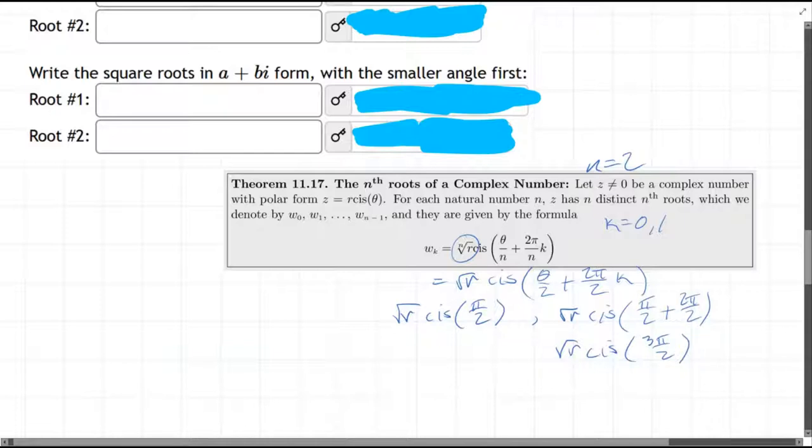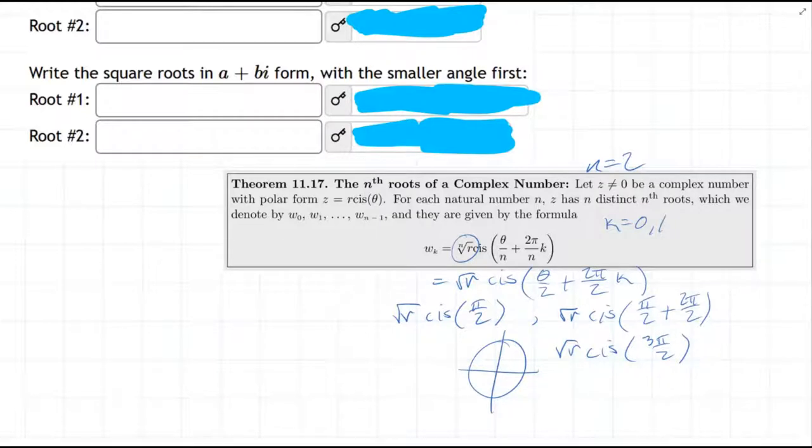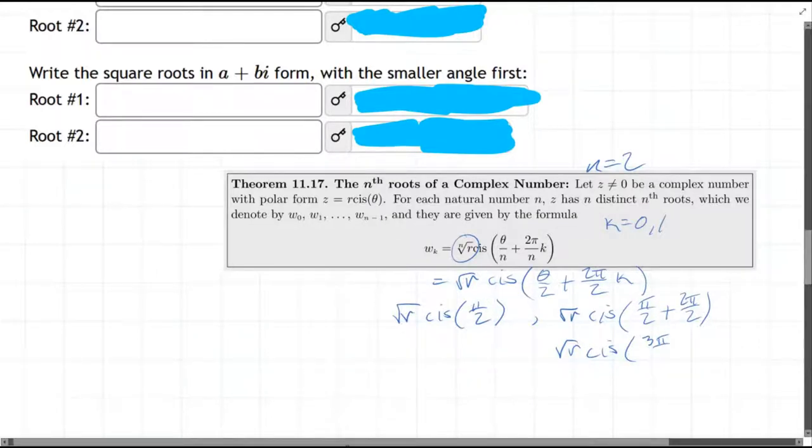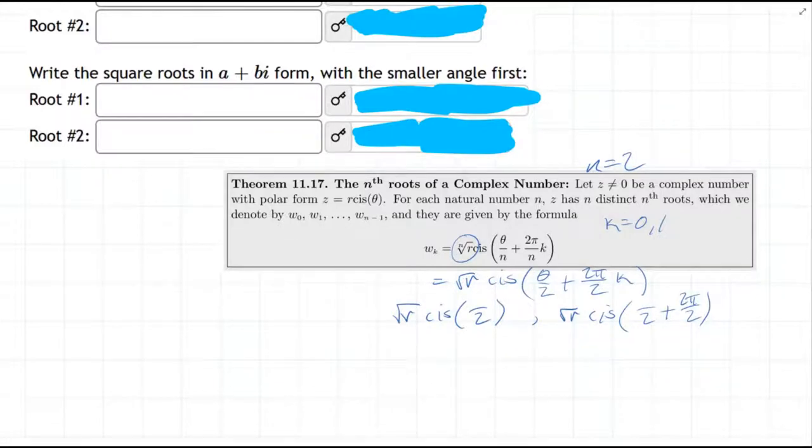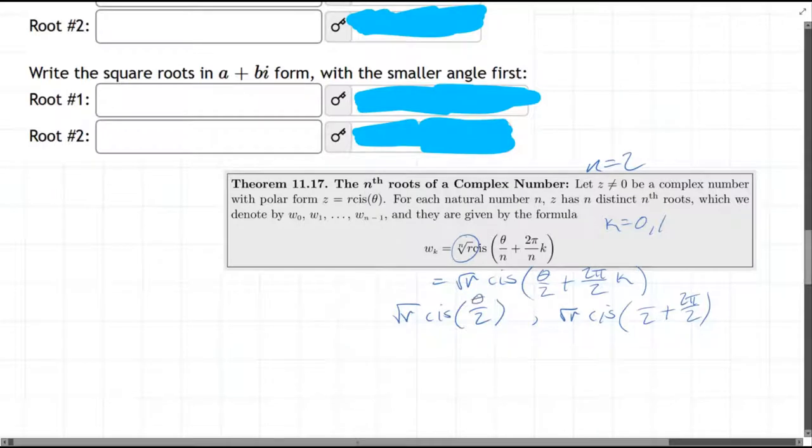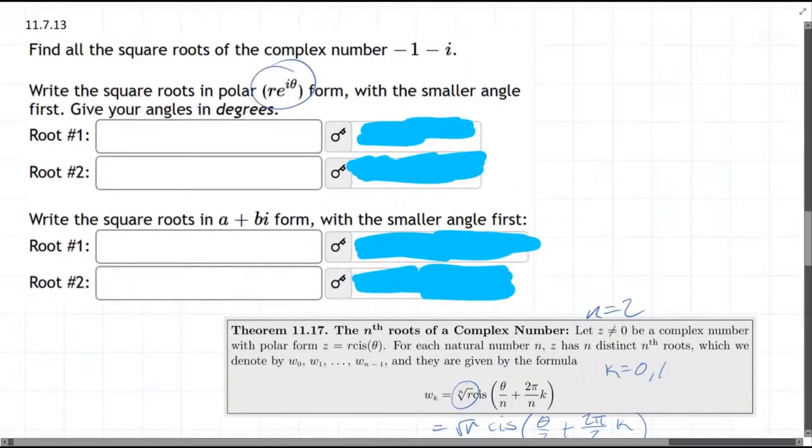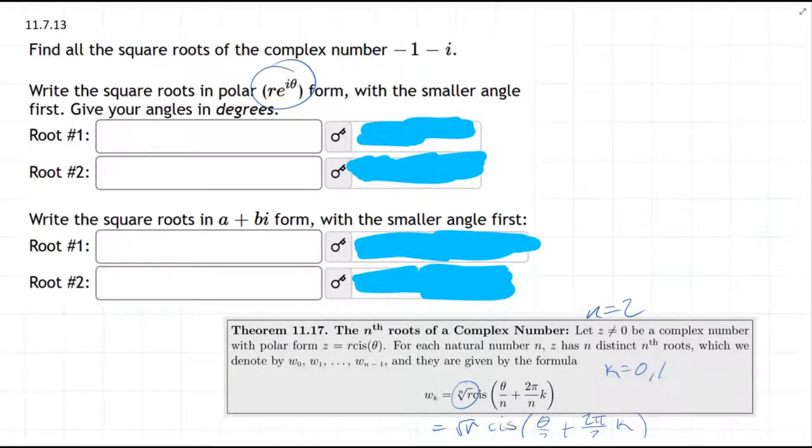These should all be thetas, not pis. That was a big mistake. It should be theta, theta, and we don't know what theta is, so we can't do that last one. So let's go ahead and figure out theta. That's really important. The radius is the easiest part, maybe we'll do that first.